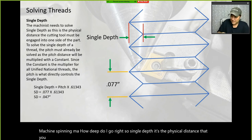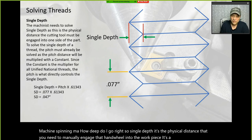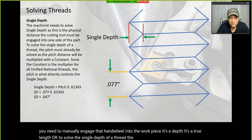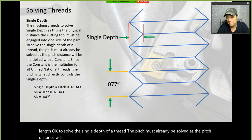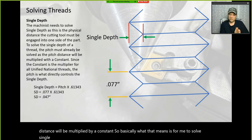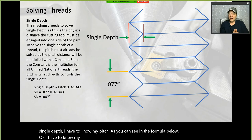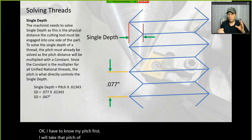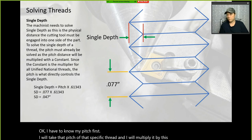To solve the single depth of a thread, the pitch must already be solved, as the pitch distance will be multiplied by a constant. The formula is: single depth equals pitch multiplied by the constant 0.61343. That constant allows us to create what we refer to as a 75% thread.